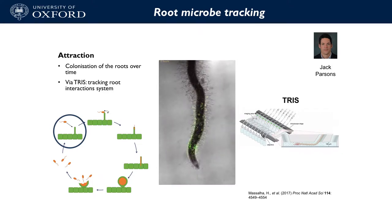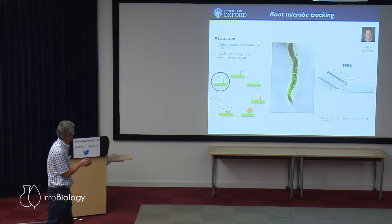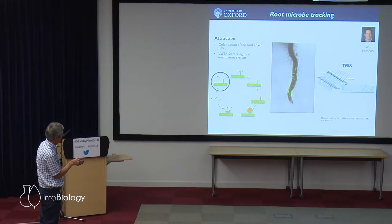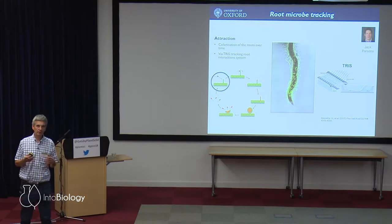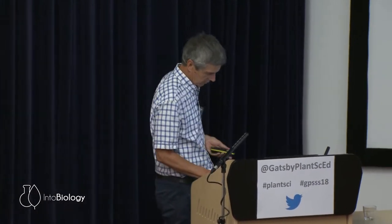How do we actually measure how bacteria get attracted to roots? This is a collaboration between Sam and Jack Parsons. In real time they're imaging, using confocal microscopy, GFP-labelled bacteria over 10 hours — and you can see the bacteria accumulating around the root, particularly around the root elongation and early development zone. This technique is based on microfluidics and allows us to look at how bacteria are attracted to roots, what happens with mutants of the bacteria or plant mutants, and what type of communication occurs between the bacteria and the plant.